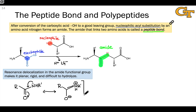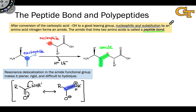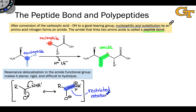This alternative resonance form of the amide shows us a couple of things. First of all, it shows us that the CN bond in the amide has some double bond character. That means that rotation about this bond is restricted, and that limits the conformational freedom of proteins or polypeptides.